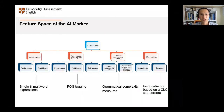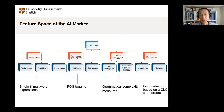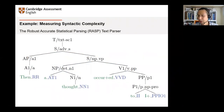Here is a general overview of the feature space. The auto marker focuses on four types of features: single and multi-word expressions such as collocations; part-of-speech tagging identifying verbs, nouns, and prepositions; grammatical complexity covering syntax and grammar errors like tense, prepositions, and articles; and error detection, trained on error-coded data to provide feedback. As a quick example, the computer uses a parsing tree of a sentence to assess complexity — the deeper the parsing tree, the more syntactically complex the sentence.